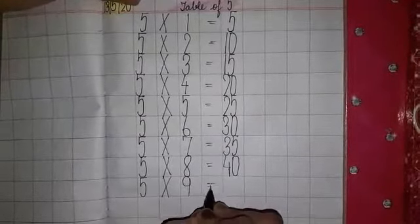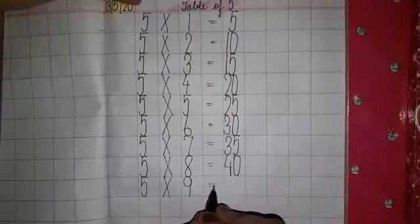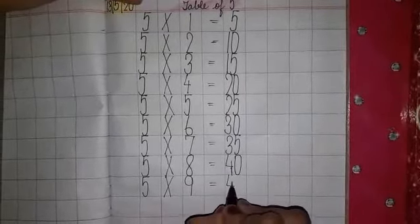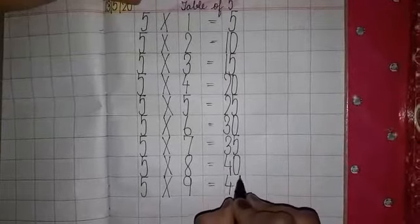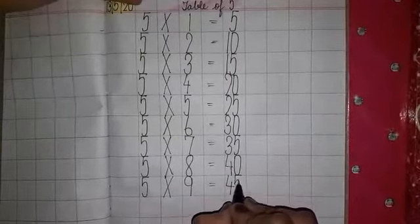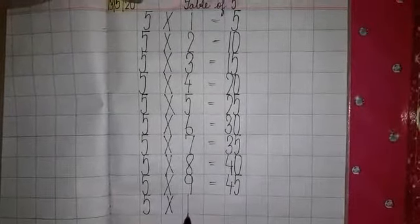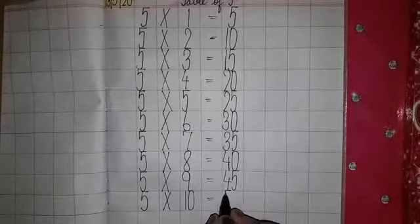Five nine jump forty five. Five ten jump fifty.